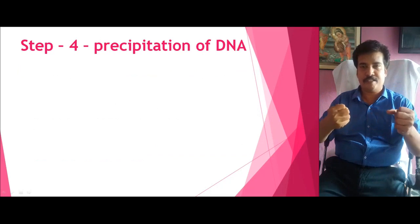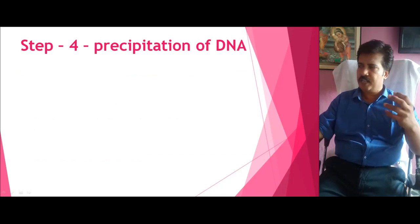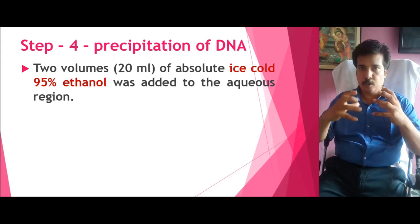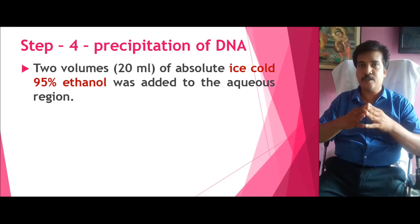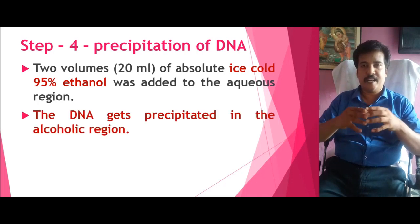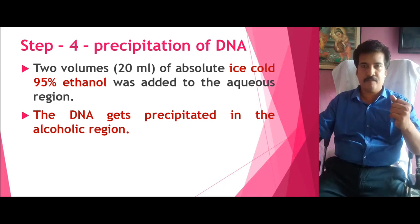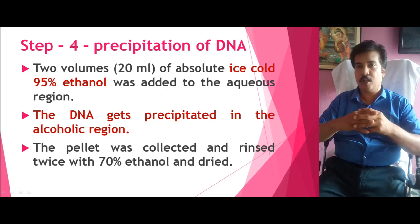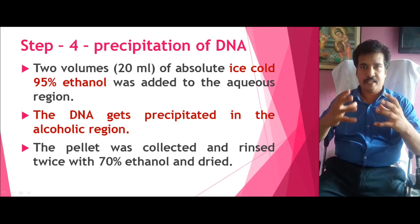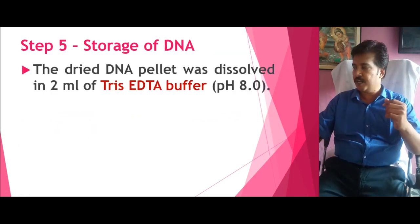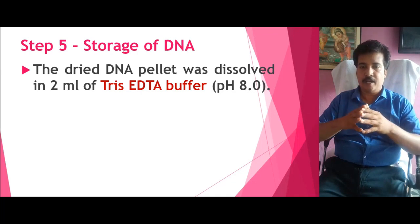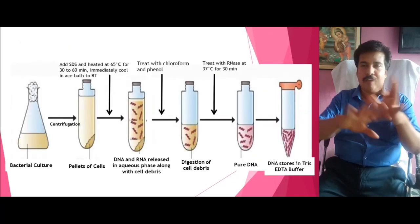The next objective is to isolate this DNA by precipitation. To the aqueous layer we add double the volume of ice-cold 95% ethanol. This ice-cold ethanol causes the precipitation of DNA into the alcoholic layer. The precipitated DNA is collected with the help of a glass rod at laboratory scale, or it can be pelleted out. It is then washed twice with 70% ethanol and dried. The DNA is stored in 2 ml of Tris-EDTA buffer at pH 8 and can be used for further studies.